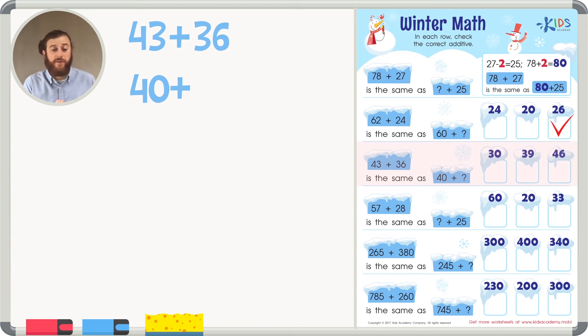So if we took away 3 from 43, we're going to have to add 3 to 36. So if we add 36 plus 3, 6 plus 3 is 9. And 3 plus nothing is 3. We're left with 39.